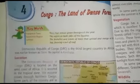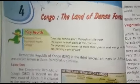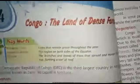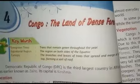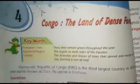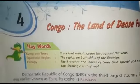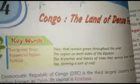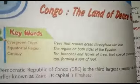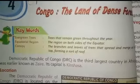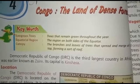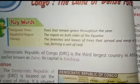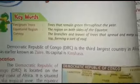Evergreen trees are trees that remain green throughout the year. The equatorial region is the region on both sides of the equator. The canopy refers to the branches and leaves of the trees that merge at the top, forming a sort of roof.